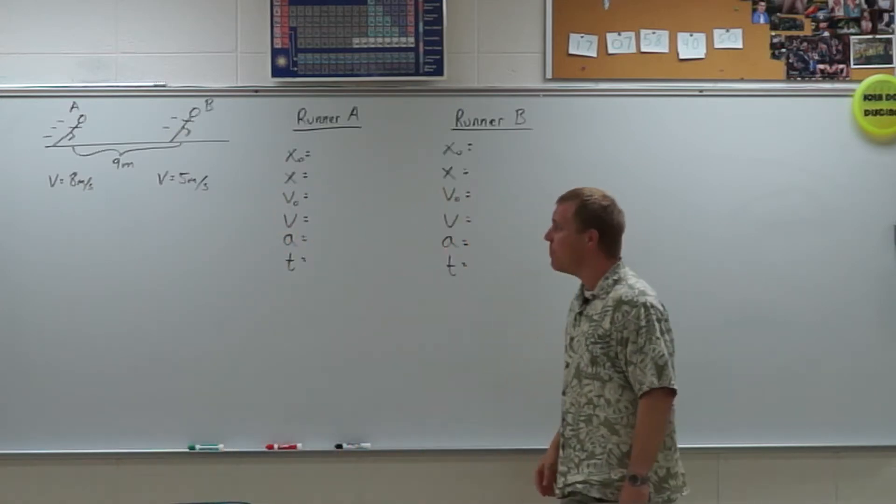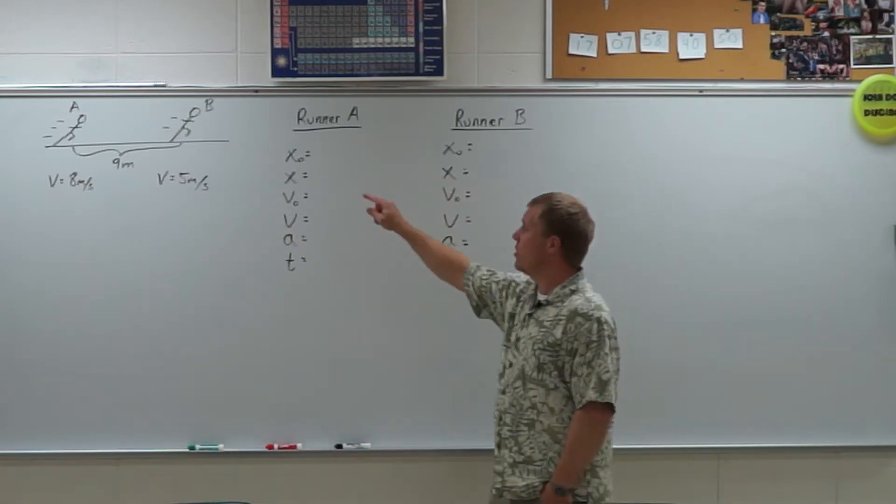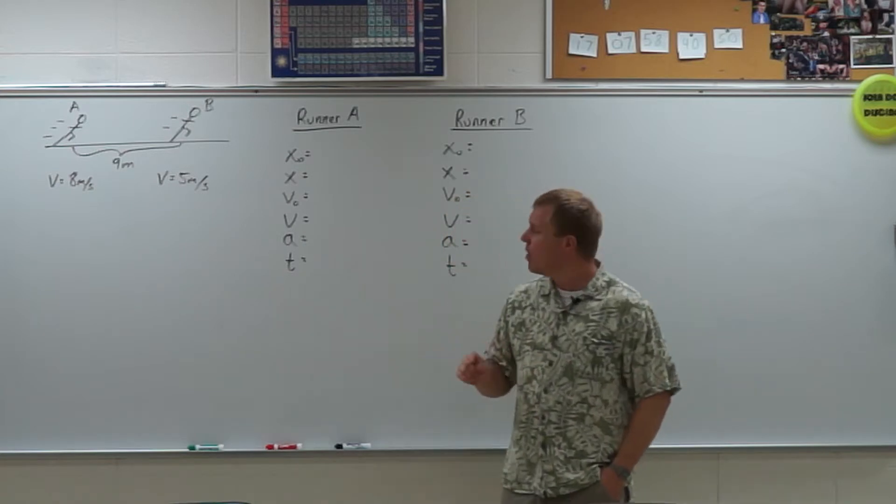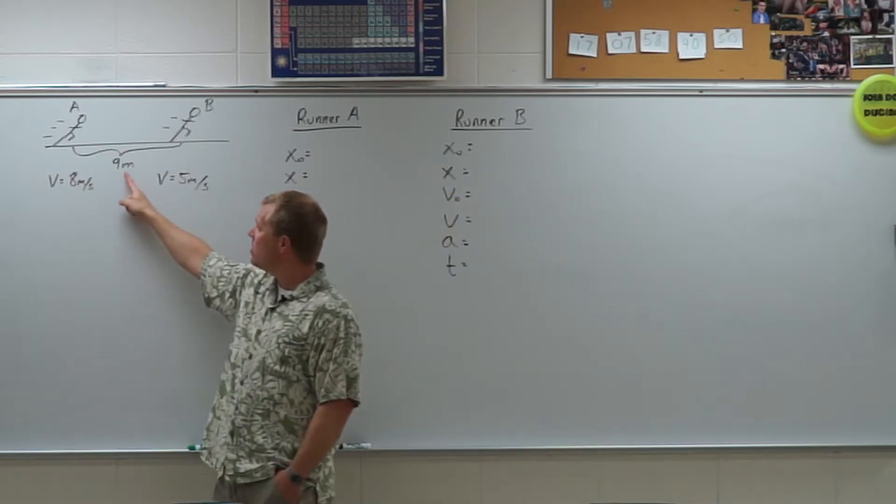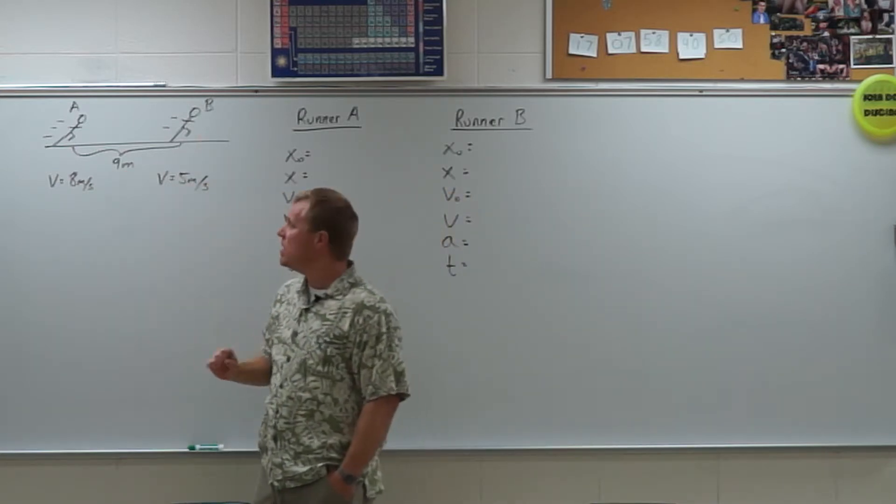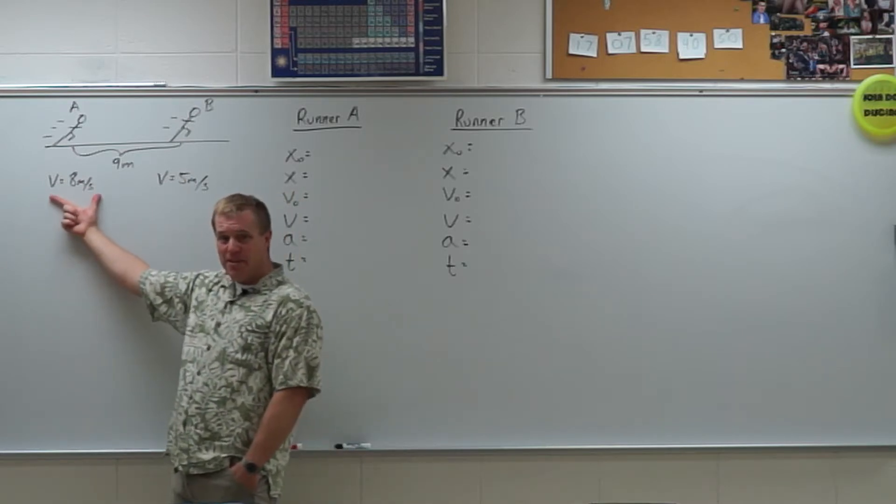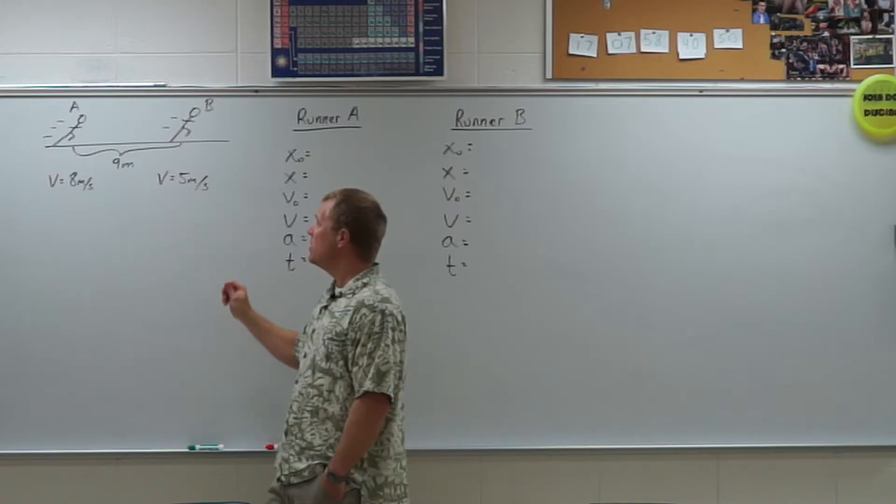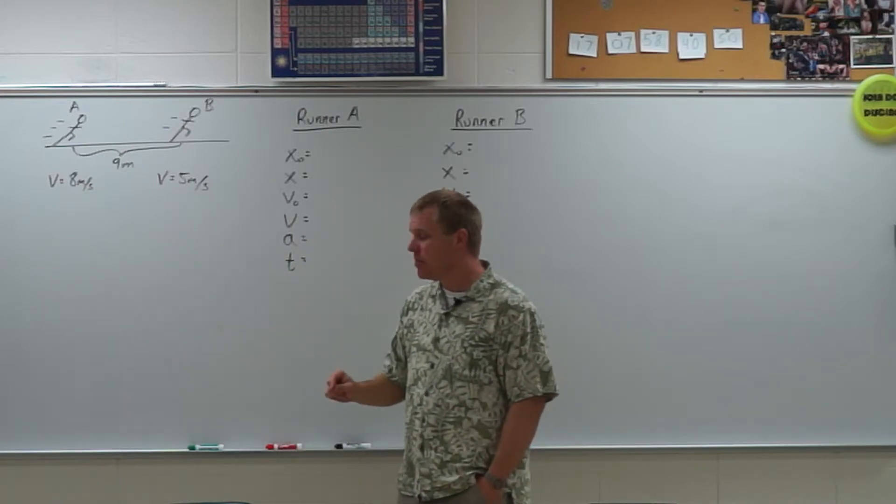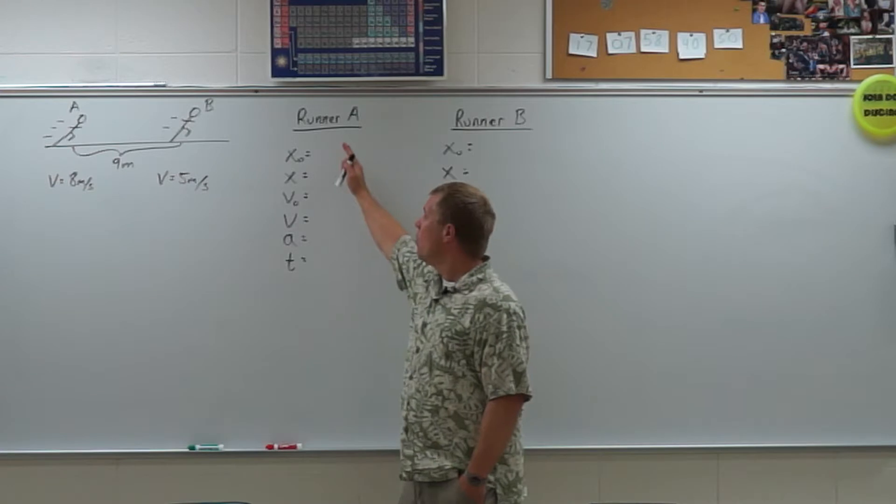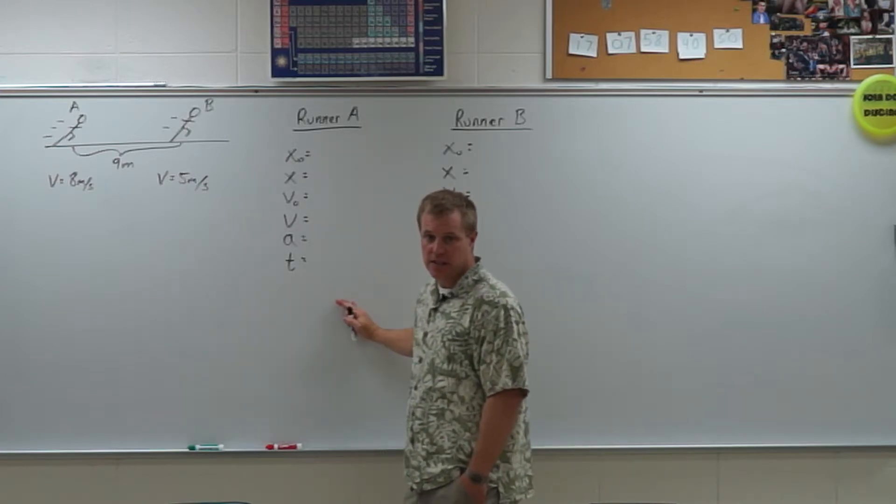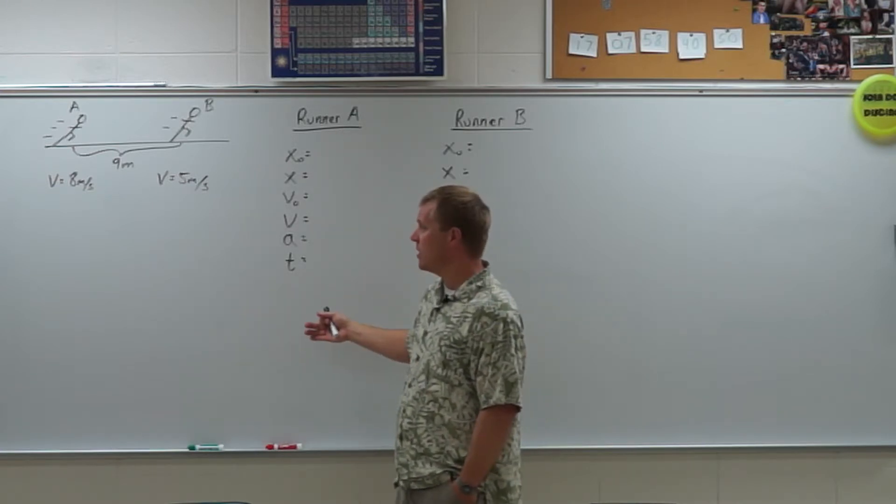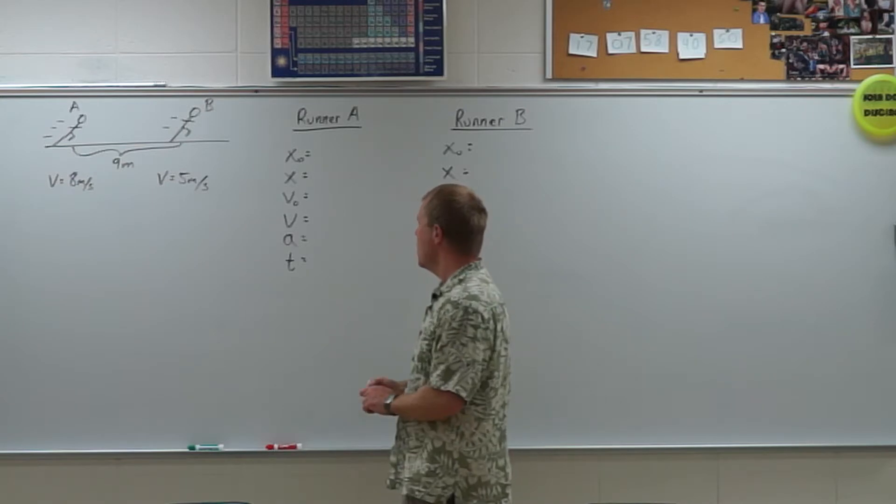So we have our problem set up. We have two runners, runner A and runner B. Runner A starts 9 meters behind runner B. Runner A is moving at 8 meters per second and trying to catch up to runner B who's moving at 5 meters per second. Now these are constant velocities, so you might remember constant velocities. We're going to set up our list of variables because it's a constant acceleration and a constant velocity.